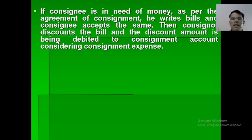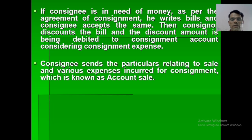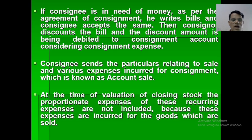If the consignee is in need of money as per the agreement of consignment, he draws a bill and the consignor accepts it. The consignor then discounts the bill, and the discount amount is debited to the consignment account as a consignment expense. The consignee sends an account sale detailing the sales and various expenses incurred for the consignment. At the time of valuation of closing stock, the proportionate recurring expenses are not included because these expenses are incurred for goods which are already sold.